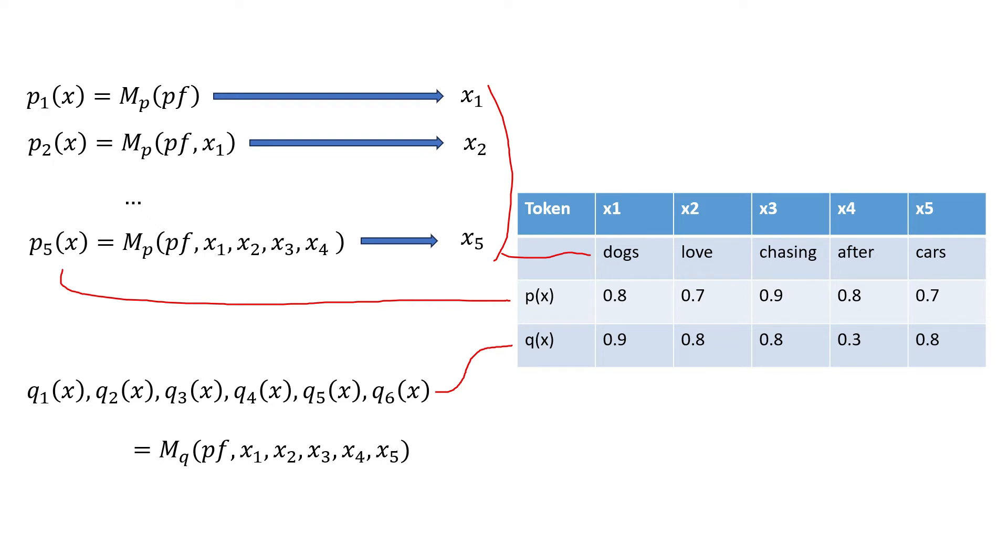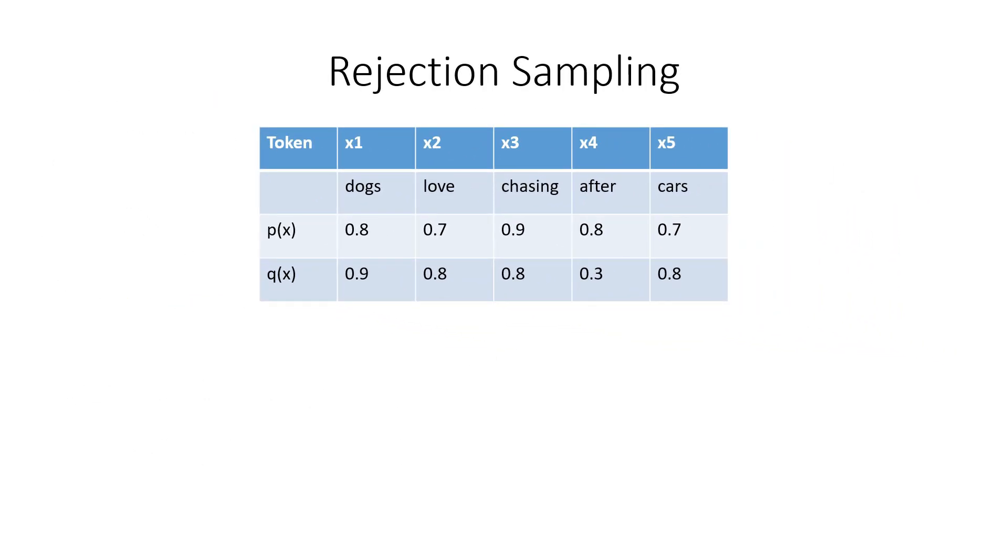The next step of the algorithm is to decide which of these tokens we want to keep. And the paper calls this rejection sampling. And how this works is we're going to go through the tokens one at a time looking at the probabilities that the two models assigned to it, and we're going to decide whether we're going to keep it or reject it. So the number of tokens that we accept will be from zero all the way to five, because in the worst case, we might reject the first token. And in the best case, we might accept all of the tokens. And we can keep going until the first token gets rejected.